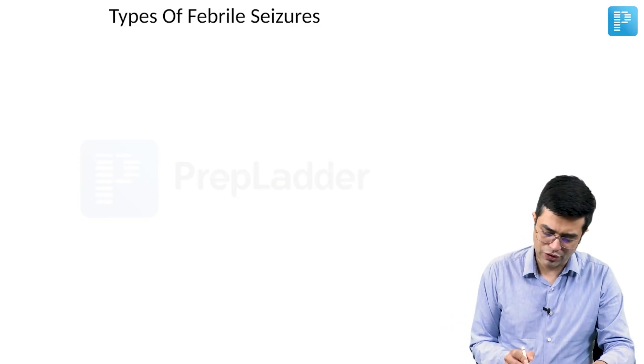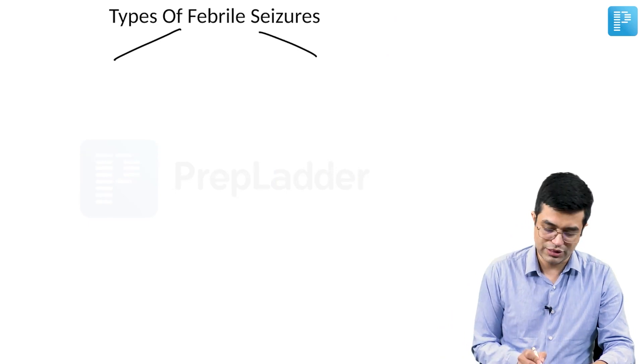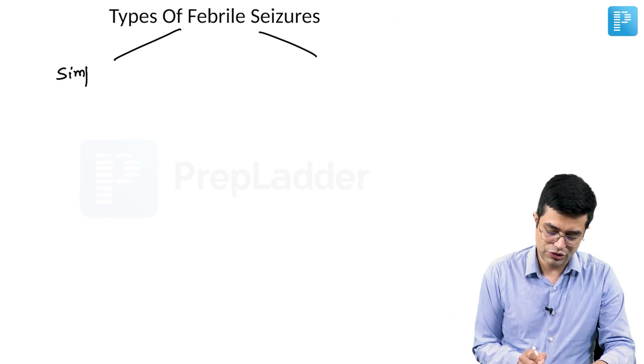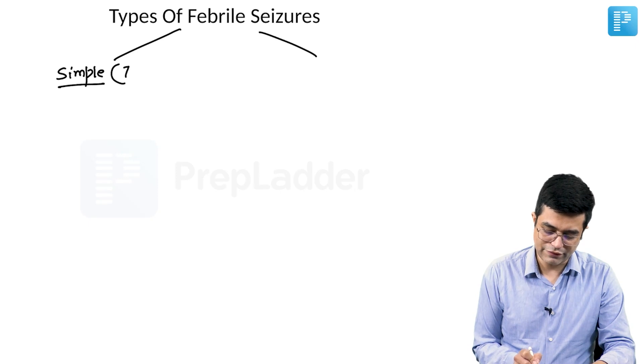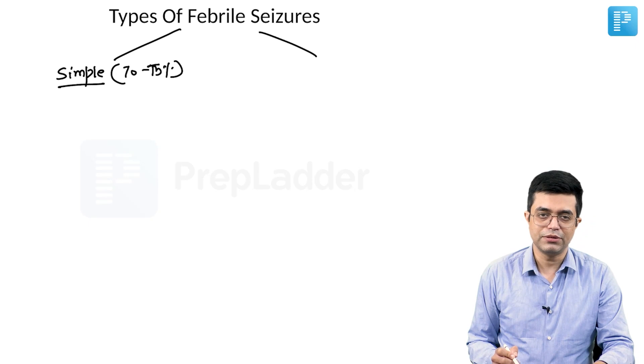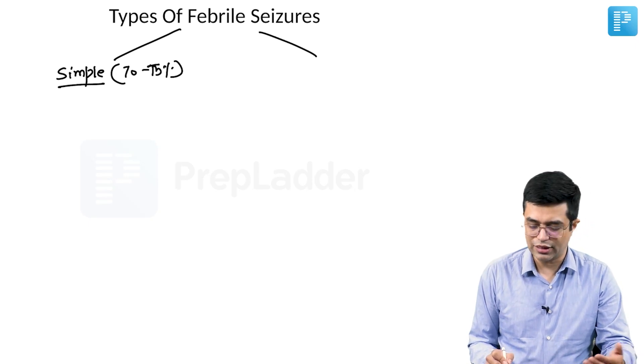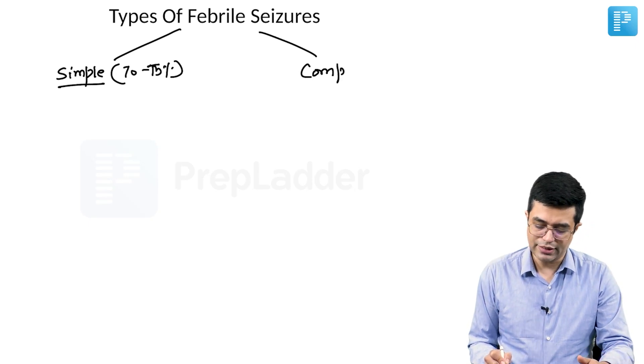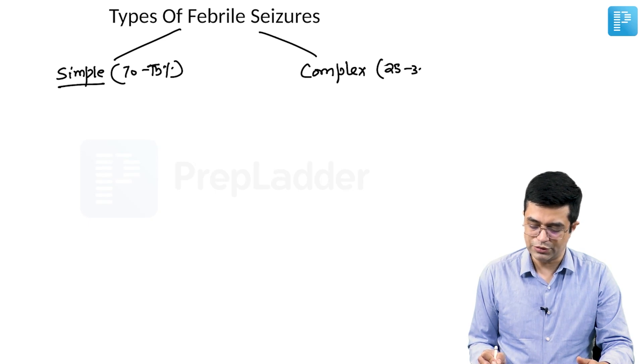There are broadly speaking two types of febrile seizures which are seen. We have simple febrile seizures which are seen in about 70 to 75 percent of cases. In fact, for all practical purposes, they are simple febrile seizures unless we specify. And second are the complex febrile seizures which are seen in about 25 to 30 percent of cases.